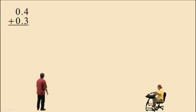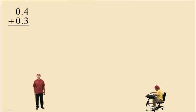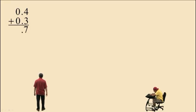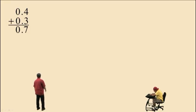Four tenths plus three tenths. Here we're adding using the vertical format. Remember, when you do this, you must line up the place value. Having decimals in our numbers makes it easy to line up place value. Four tenths plus three tenths: four plus three is seven, zero plus zero is zero. So our result is seven tenths.